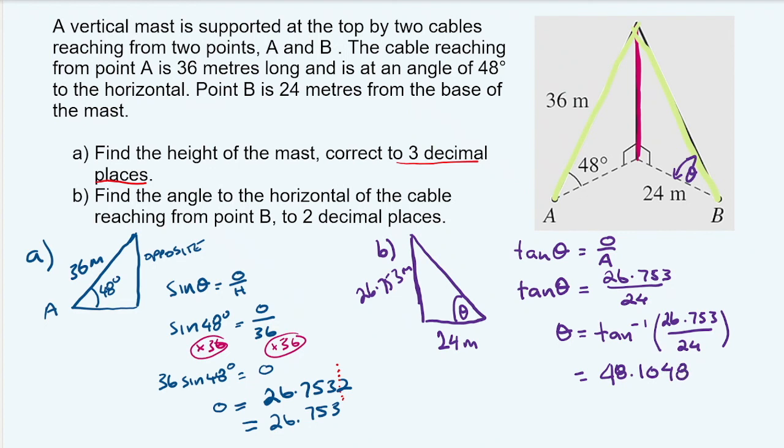But for this one, we only want two decimal places. So we can cut this off here. We look at that next number. It's a four. So it's just going to be 48.10.